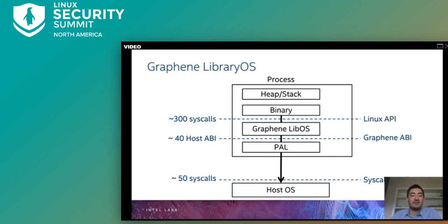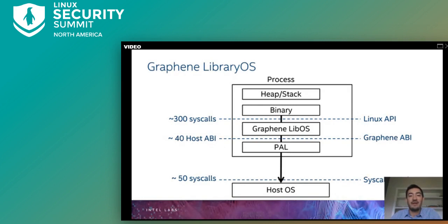By design, Graphene consists of two layers: the stateful library OS layer that intercepts system call requests from the user application, verifies inputs, processes requests, verifies outputs, updates internal state, and returns results to the application; and the stateless platform adaptation layer — PAL — which is invoked only when the host OS must be involved. Graphene currently supports more than 300 system calls, maps them to around 40 PAL ABI functions, and PAL uses around 50 actual system calls to communicate with the host OS.